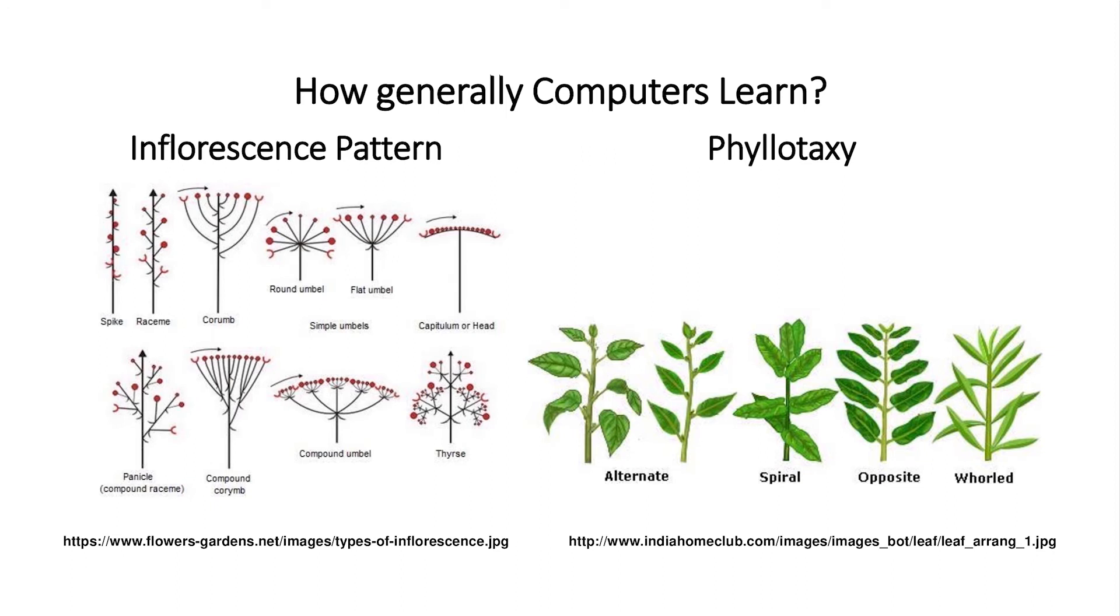First of all I will make you understand how computers learn, what is the similarity between the learning process of computers and human beings. For that I have given you an example of plant classification. We know that we can classify plants based on inflorescence pattern or phyllotaxy. But earlier scientists might have used root tip length or shoot tip length in addition to this inflorescence pattern and phyllotaxy. Upon learning only they came to know that there is no point in using root tip length or shoot tip length to classify the plants.